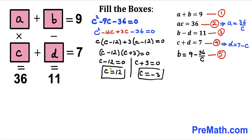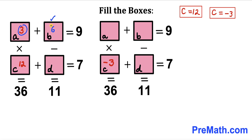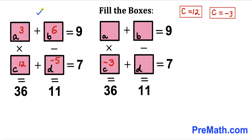Separating these factors gives us two values: c equals positive 12 and c equals negative 3. For the first scenario with c equals 12: a equals 36 divided by 12 equals 3, and since a plus b equals 9, b equals 6. Then since b minus d equals 11, we have 6 minus d equals 11, giving d equals negative 5. Checking: 12 plus negative 5 equals 7. ✓